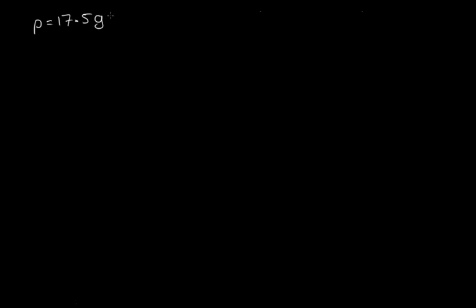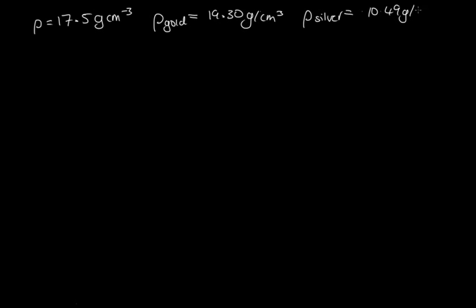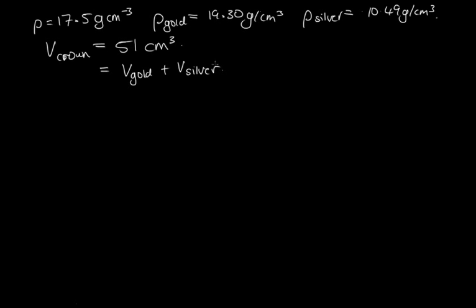Now we need to work out what fraction of the crown is silver and what fraction is gold. We have the density of the crown at 17.5 g/cm³, the density of gold at 19.30 g/cm³, the density of silver at 10.49 g/cm³, and the volume of the crown at 51 cm³. The crown is made up of a volume of gold plus a volume of silver. So the volume of gold equals 51 cm³ minus the volume of silver. Let's call that equation one.